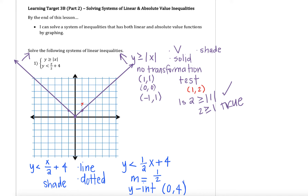We can go ahead and plot these on our graph. I'm up here at (0,4). With a slope of one-half, that tells me I'm going up 1 and then to the right 2. We can see that eventually these are going to intersect, but I might need to extend that graph even more. I'm going to fill in our dotted dashed line for this linear function, and keep the dashed line going all the way down.